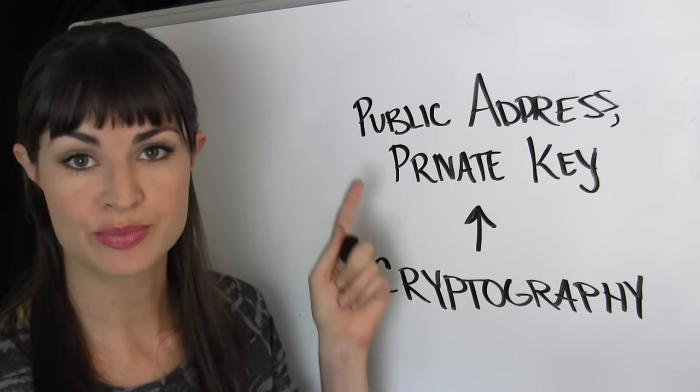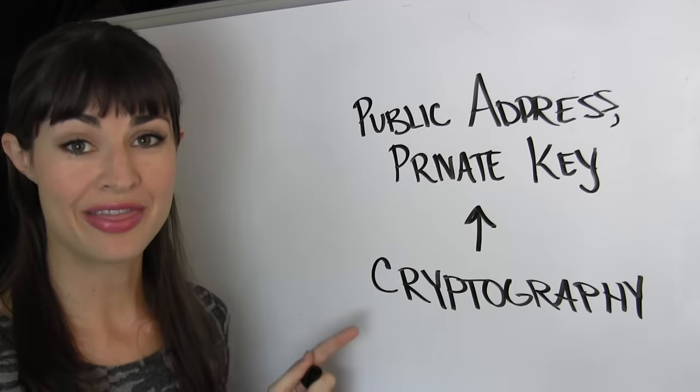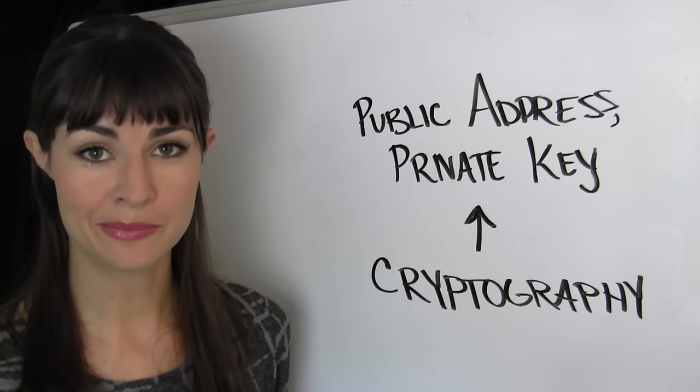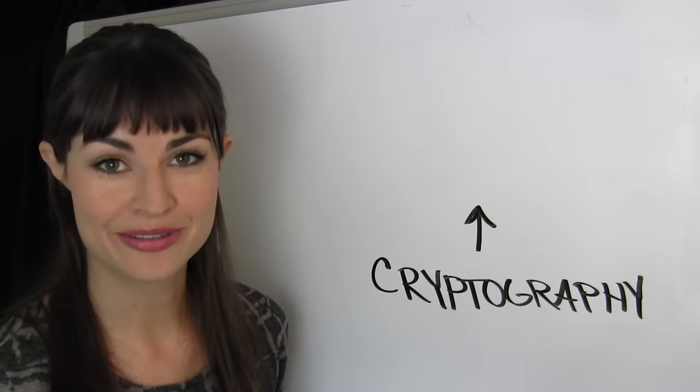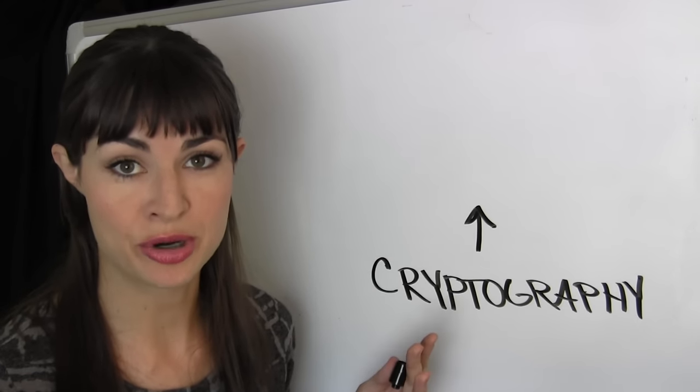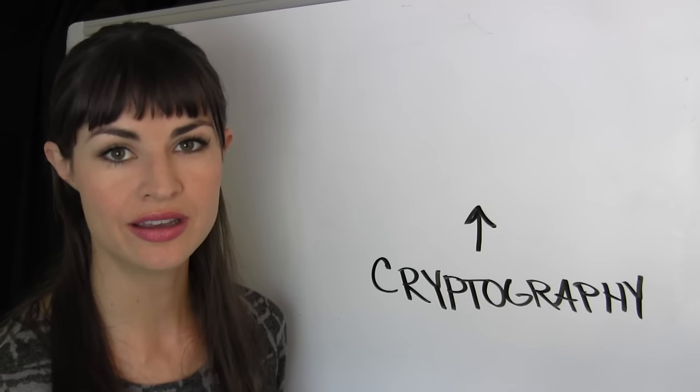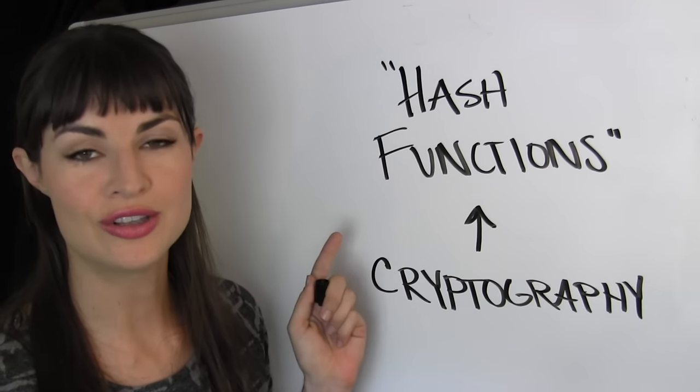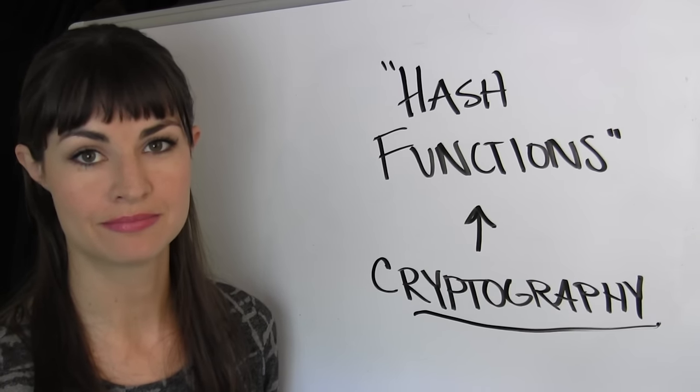So that whole public address, private key thing, the stuff that's mostly managed by your wallet, that's the cryptography bit. See, I told you it wasn't that hard. And as a little bonus bit of knowledge for you, remember how mining is solving math problems? The math that those mining machines are doing are called hash functions and they are based on cryptography. Cool, huh?